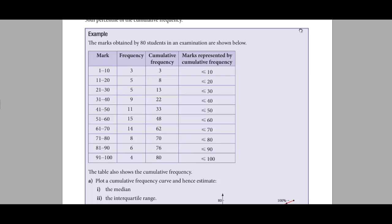What does cumulative frequency mean? How many students got marks 10 or less? They are 3. How many students got 20 or less? They are 5 plus 3, which is 8. Just keep on adding the frequencies. How many students got 30 or less? 5 plus 5 is 10, and 10 plus 3 is 13 students. How many students got 40 or less? 9 plus 5 plus 5 is 19, and 19 plus 3 is 22. Likewise, we keep on adding the frequencies.